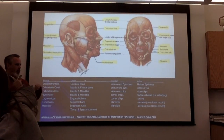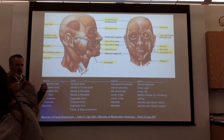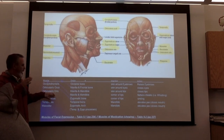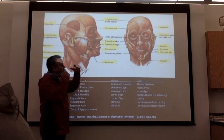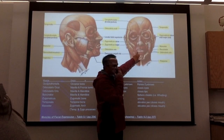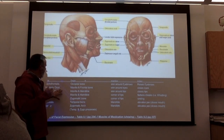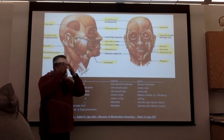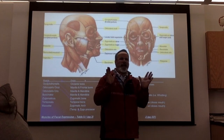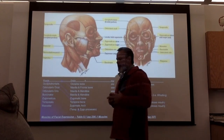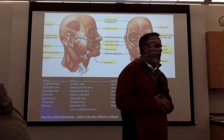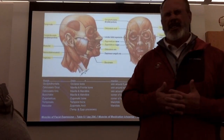Orbicularis oculi and orbicularis oris. Which one's associated with the eye? The oculi. Orbicularis oculi — the oris is oral. Both are circular muscles. The orbicularis oculi completely surrounds the eye, and it originates from the maxilla and the frontal bone, inserting in the skin around the eyes. It doesn't just close the eyes — it squeezes the eyes shut.